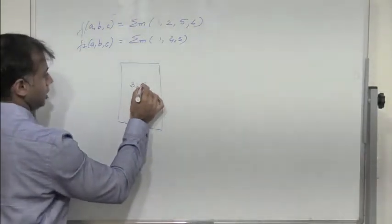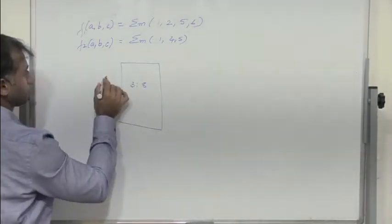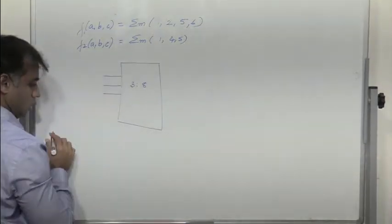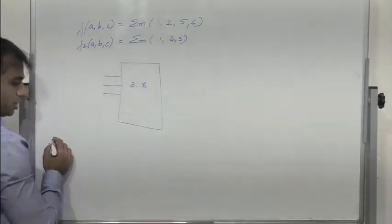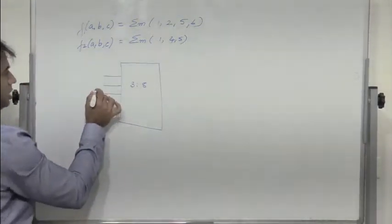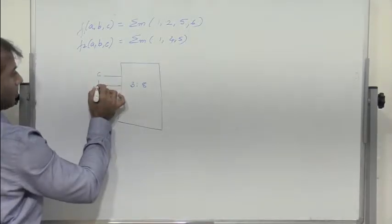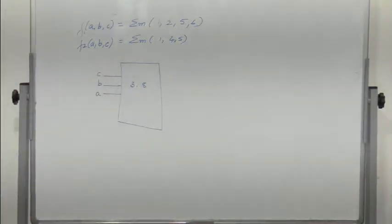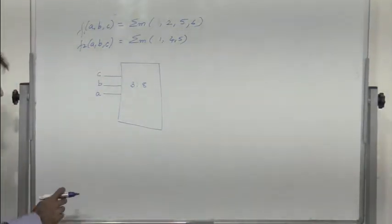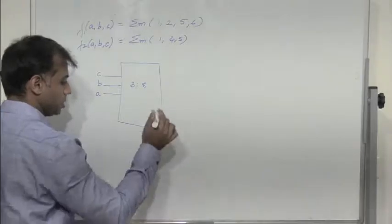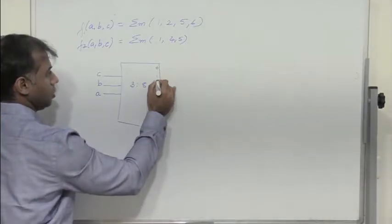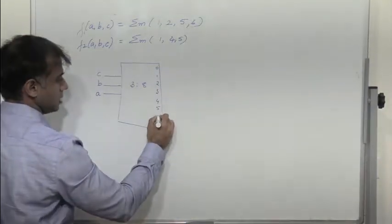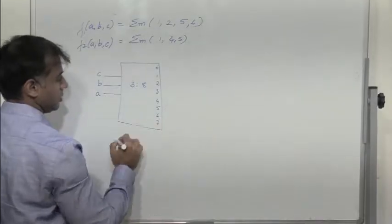Since there are 3 inputs, I have to use a 3-to-8 decoder. The inputs are A, B, and C, and we have the outputs 0, 1, 2, 3, 4, 5, 6, and 7.